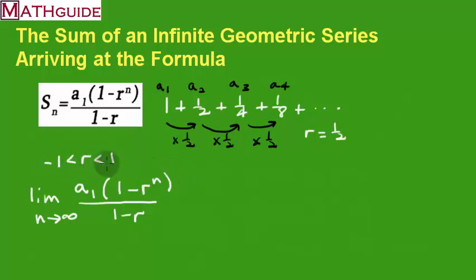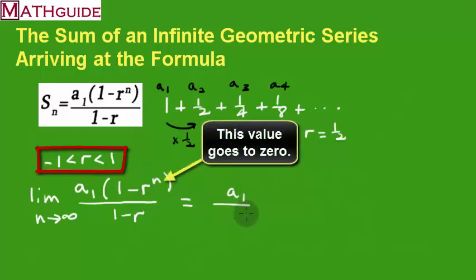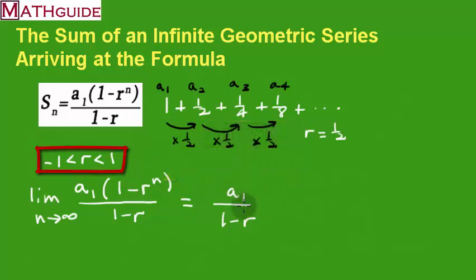This value over here is going to shrink to nothing. Literally, as we get closer and closer to infinity, this value just fades away, so this becomes 0. That whole thing becomes 0, so we're going to have a₁ over 1 minus r, because this value shrinks to 0. And that's what we're left with.